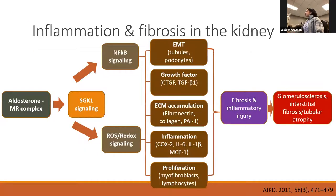How does activation of MR lead to inflammation and fibrosis? The aldosterone-mineralocorticoid receptor complex can lead to a cascade of signaling causing upregulation of several pathways that drive epithelial-to-mesenchymal transition and growth factor release. There can be extracellular matrix accumulation, inflammation, and proliferation, which eventually all lead to glomerulosclerosis, interstitial fibrosis, and tubular atrophy.